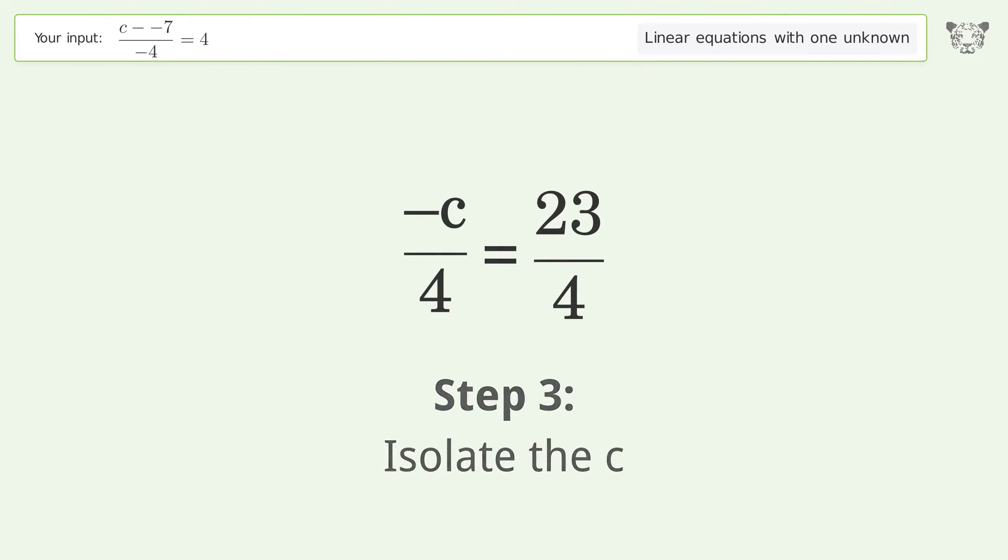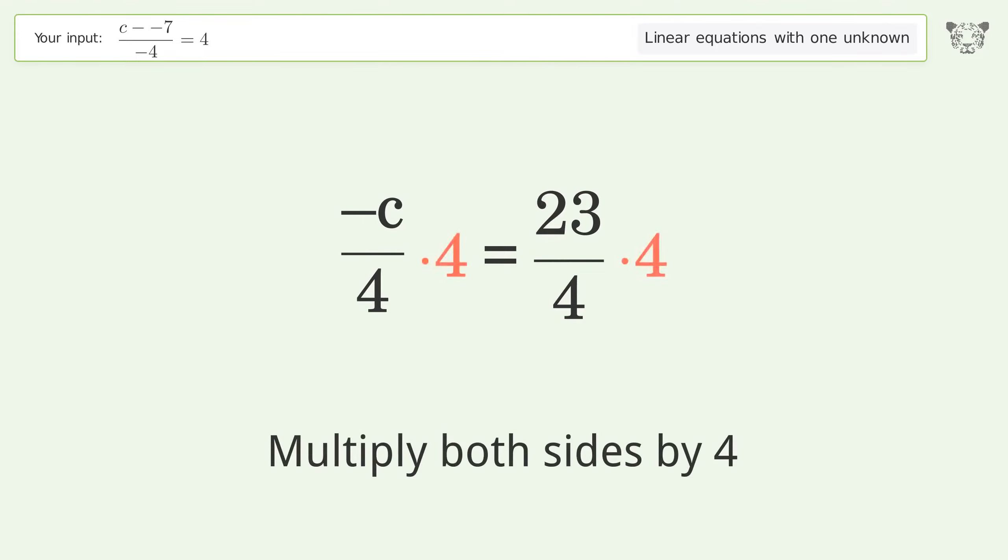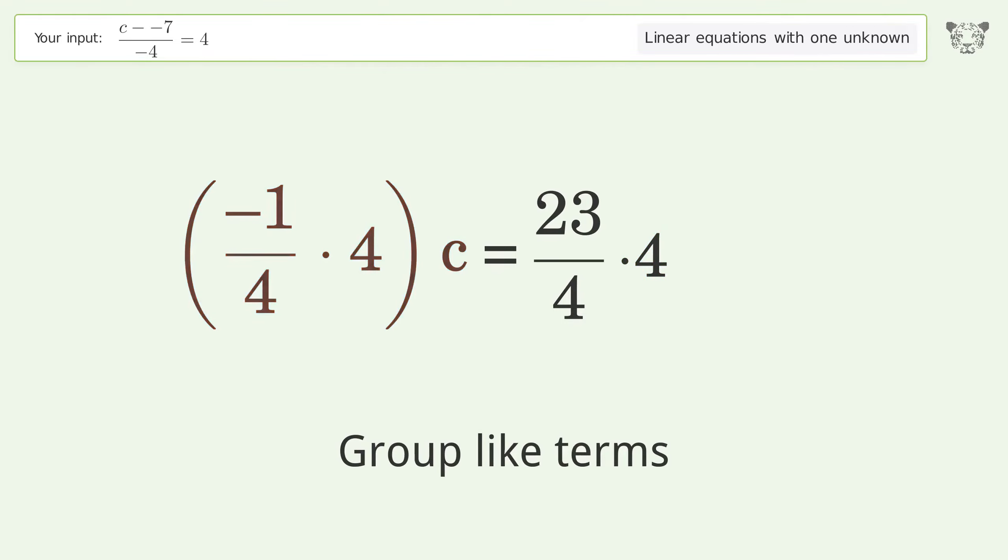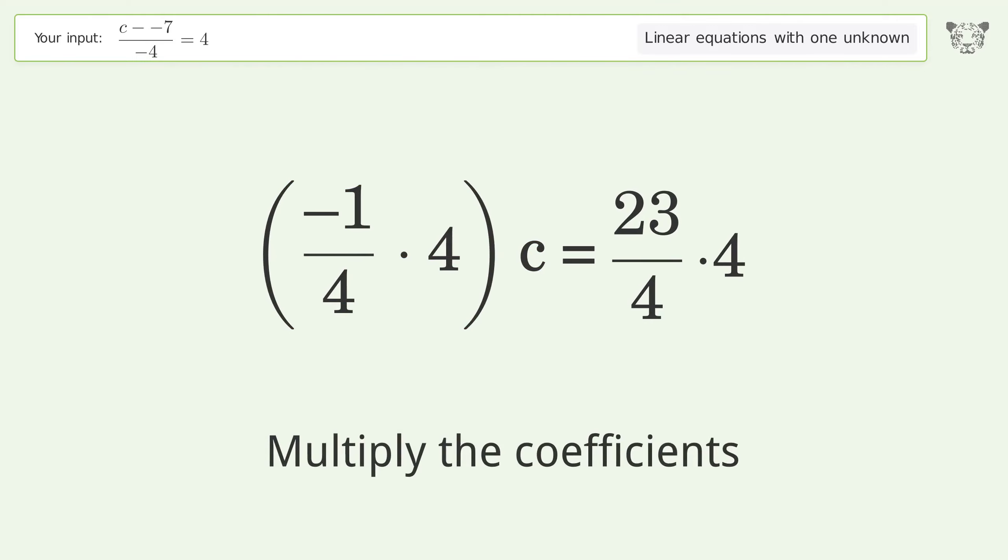Isolate the c by multiplying both sides by 4. Group like terms and multiply the coefficients.